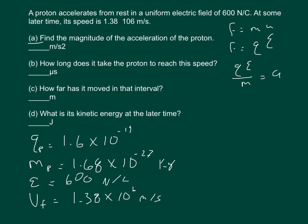Part B says how long does it take for the proton to reach its speed. Again, the final velocity minus the initial velocity over T equals A. So if I put final velocity minus initial velocity over T equals A, then I could rearrange this and initial velocity is zero. So the final velocity over the acceleration is equal to the time. That's our equation for part B.